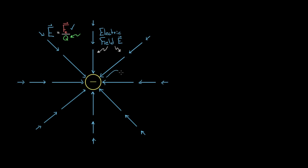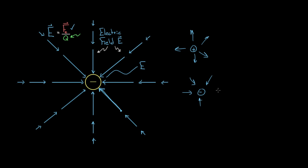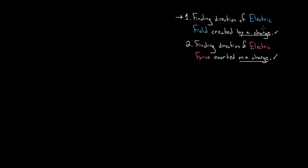So to summarize: the electric field created by a positive charge points radially outward, but for a negative charge you'd reverse all the arrowheads because the electric field from a negative charge points radially inward toward that charge. That's how you determine the direction of the electric field created by a charge. Check — we've done this first skill.